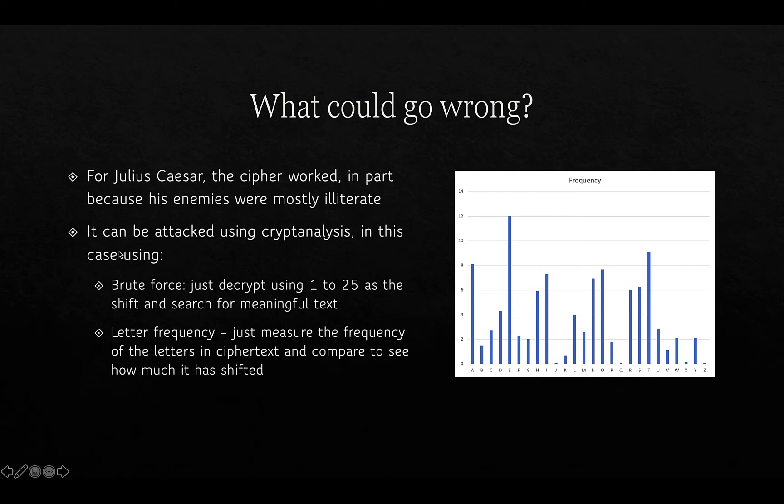For more complicated ciphers, cryptanalysis can use letter frequency. In English, each letter occurs a certain percentage of times. We can analyze the frequency of letters in the ciphertext and try to match that up to get an idea of which letters are substituted for which others. This relies on having sufficient ciphertext.